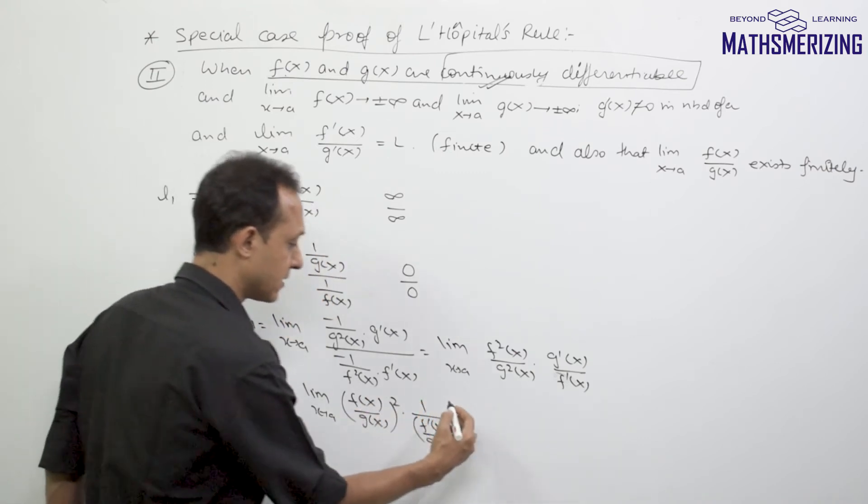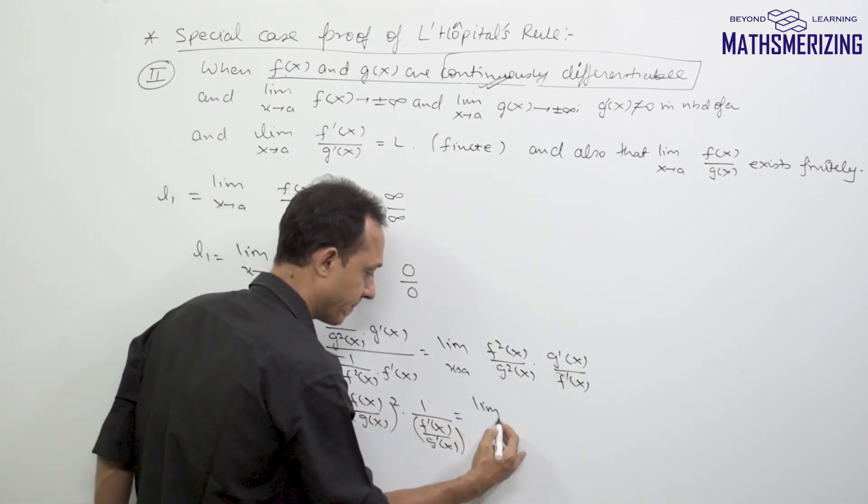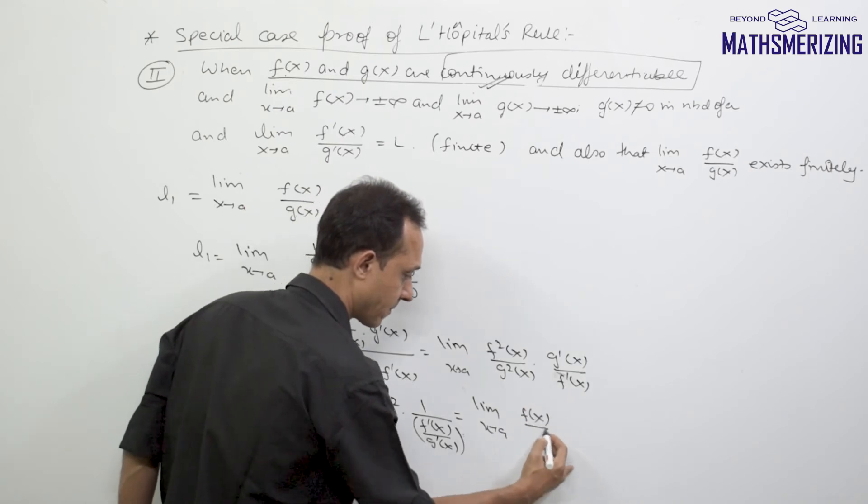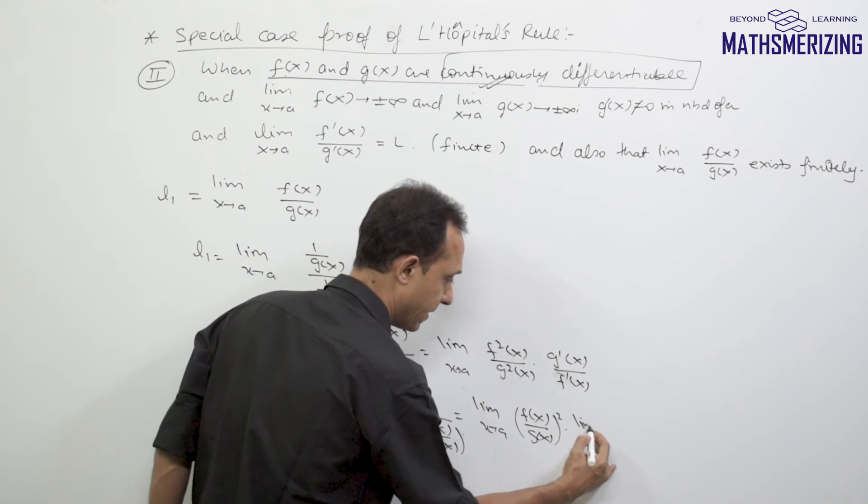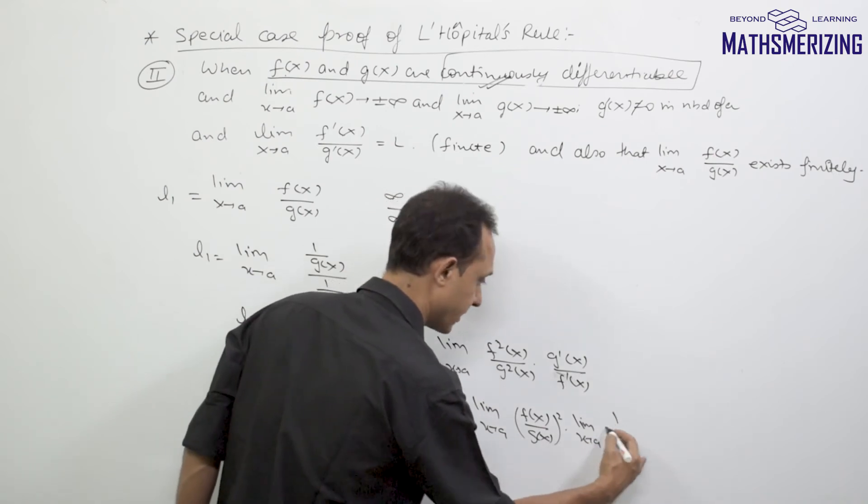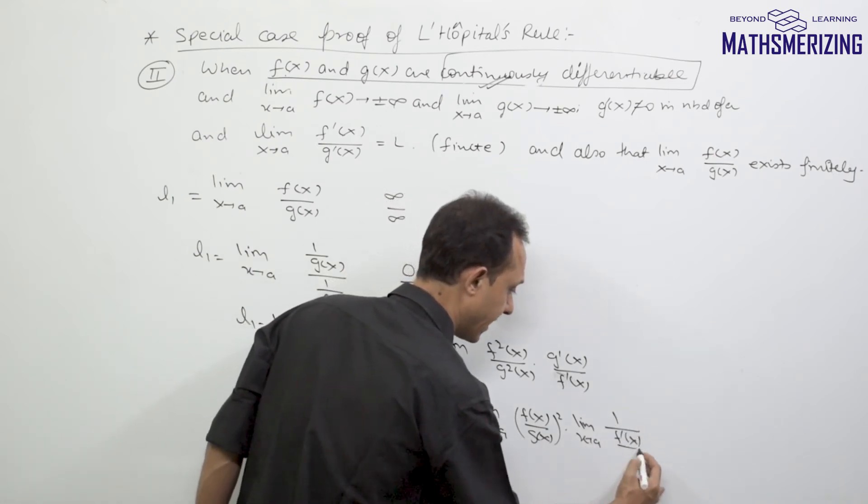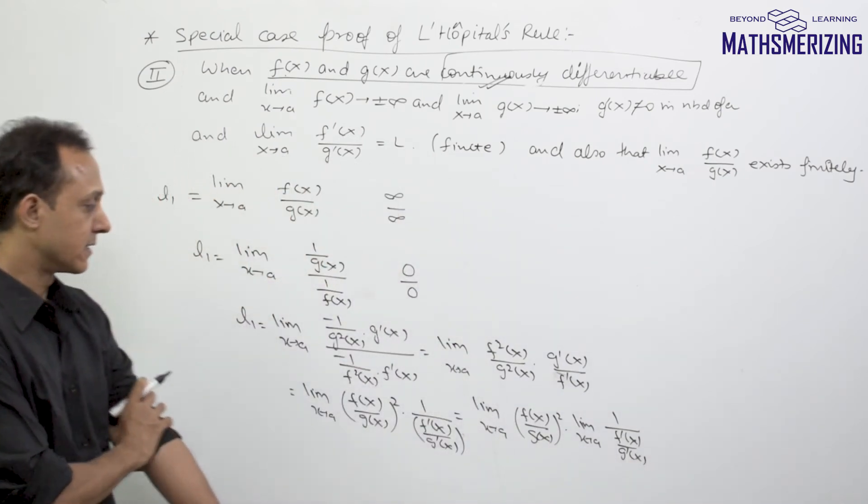So now I'll separate the limits. So I'll write limit x tends to a of f(x) upon g(x) whole square, and then limit x tends to a of 1 upon f'(x) upon g'(x).